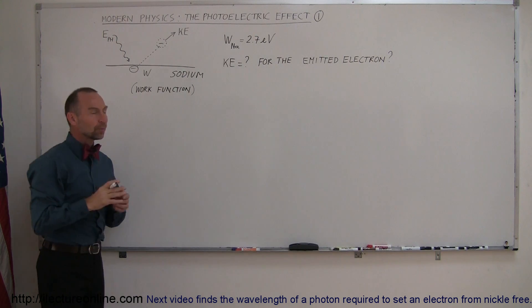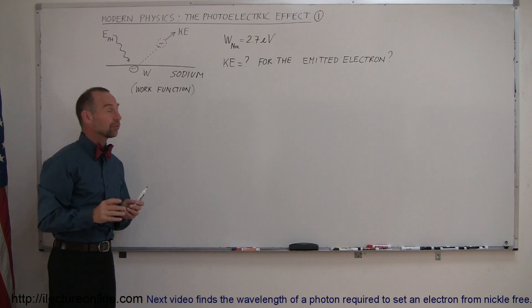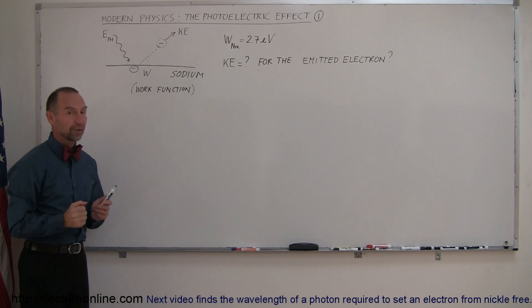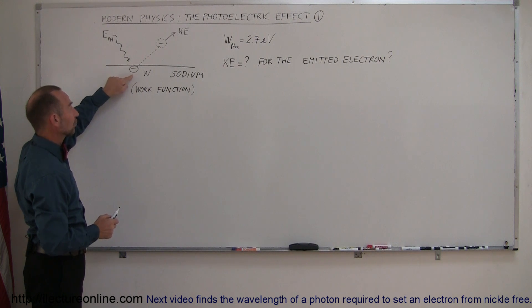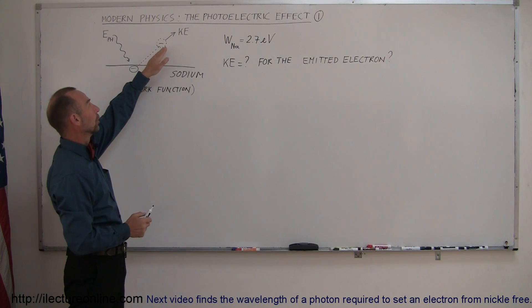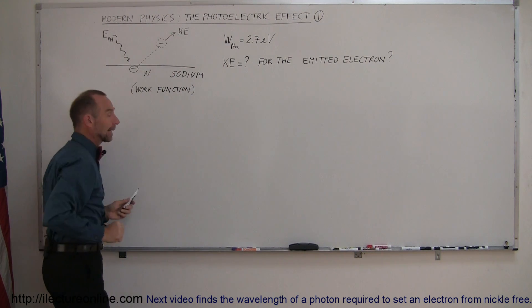And to overcome the work function, you have to impart enough energy, in this case for sodium, 2.7 electron volts, for the electron to jump free. If the incoming photon has enough energy to make the electron jump free, it can then have whatever leftover, the electron will use whatever leftover it has to then gain kinetic energy.